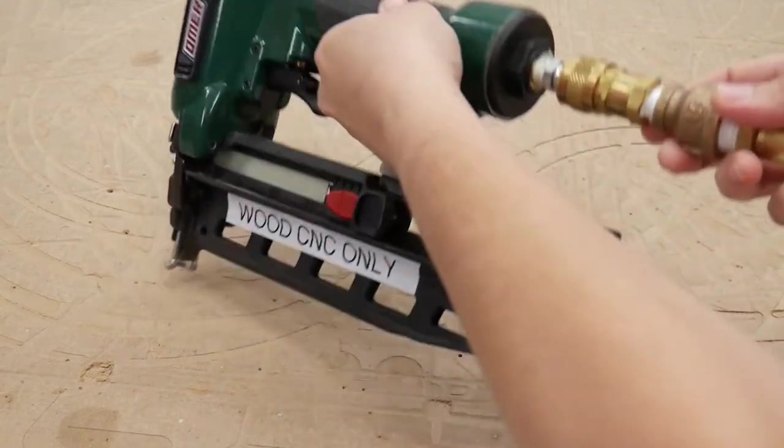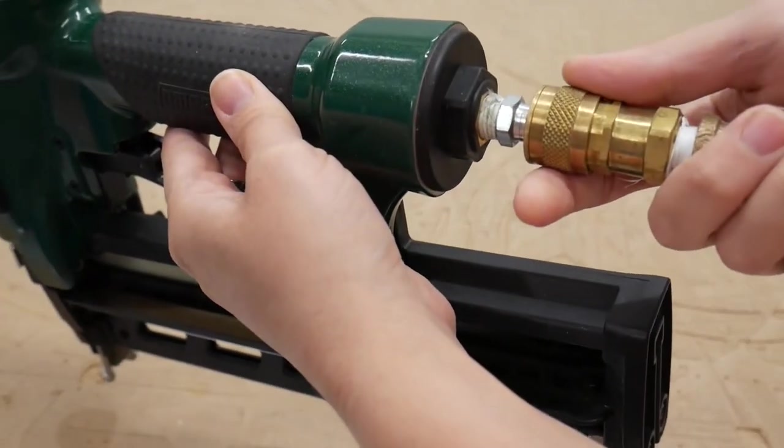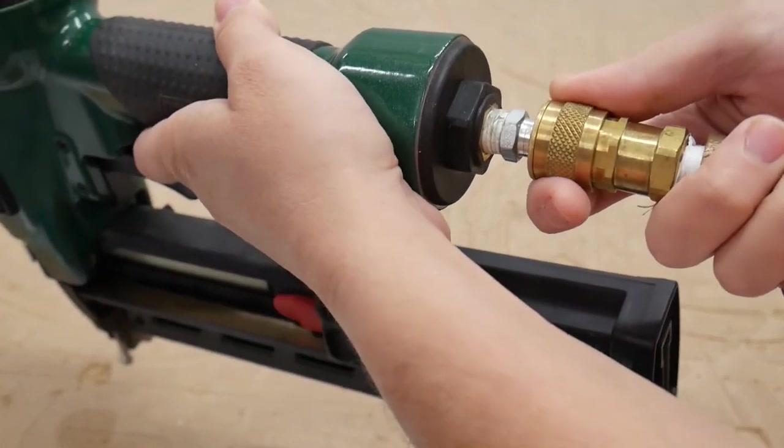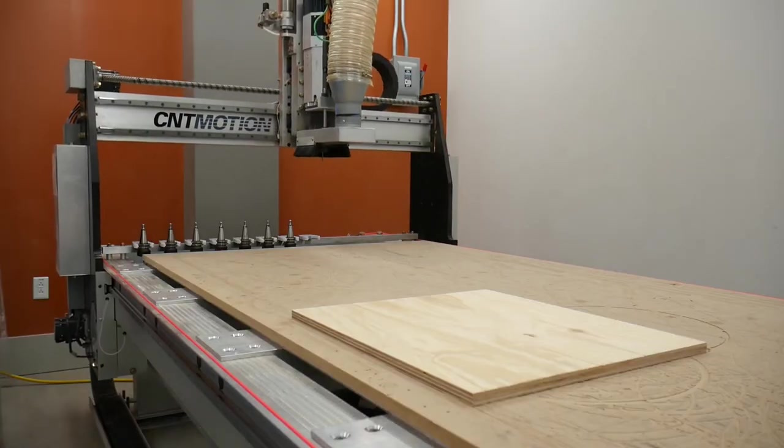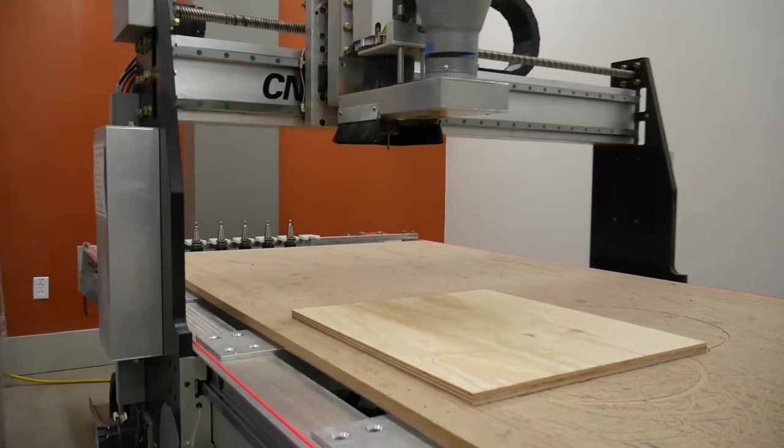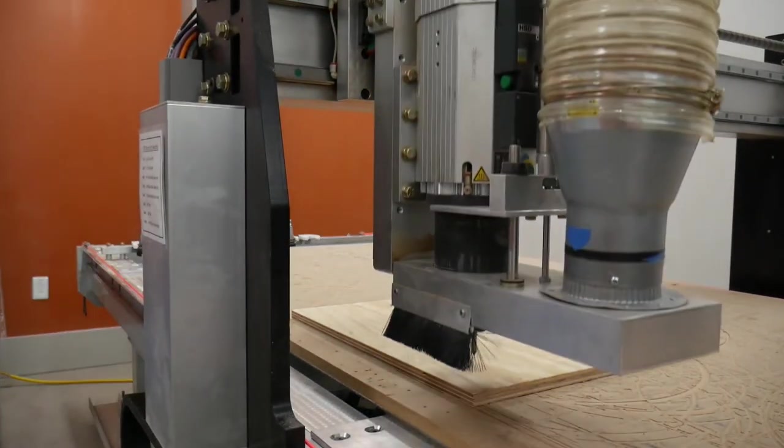To disconnect the pneumatic air from the brad nailer, pull back on the knurled portion of the brass fitting. Remember, if you have any questions or need help securing your stock, please ask any of our friendly TechSpark staff members.